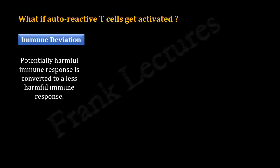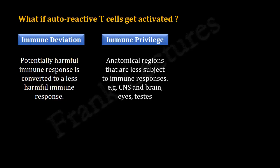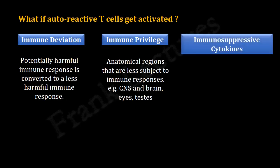Immune deviation refers to the phenomenon in which a potentially harmful immune response is converted to a less harmful response. Immune privilege refers to the fact that certain anatomical regions — including the central nervous system and brain, the eyes, and the testes — are naturally less subject to immune responses. Certain cytokines such as interleukin-10 and transforming growth factor beta have immunosuppressive effects; for example, they inhibit macrophage activation and inflammatory cytokine secretion, down-regulate intracellular signaling in responding T cells, and block antigen-presenting cell function.